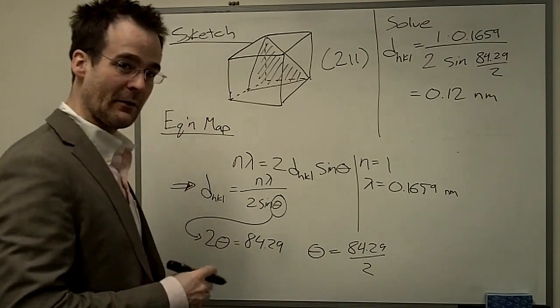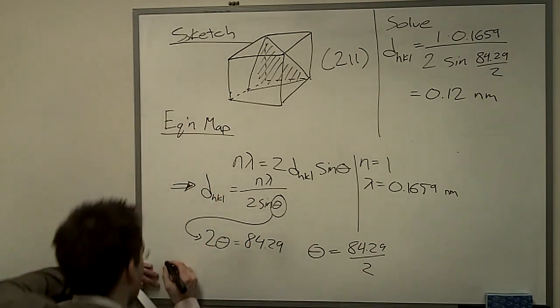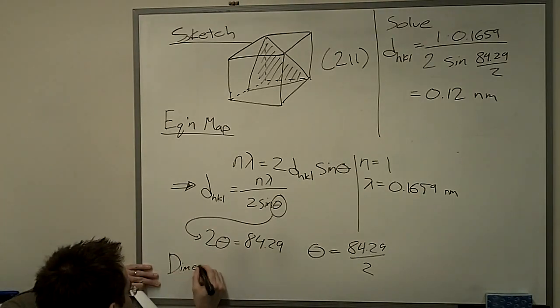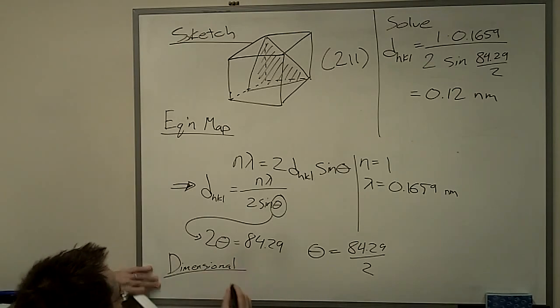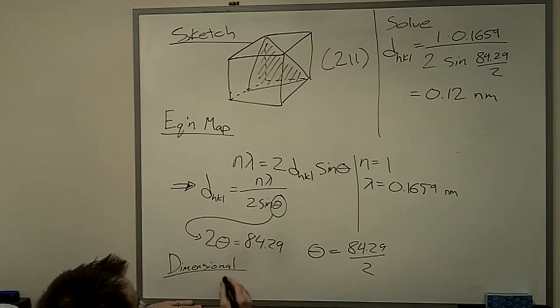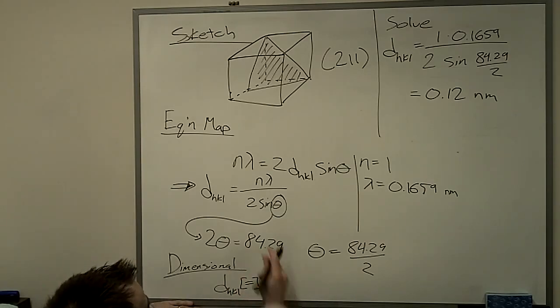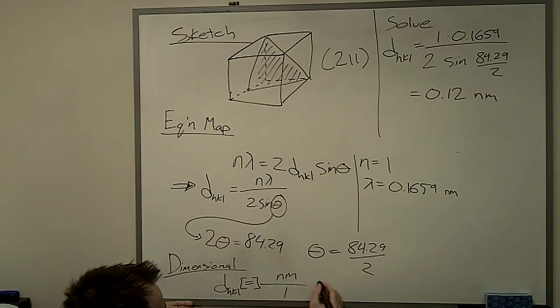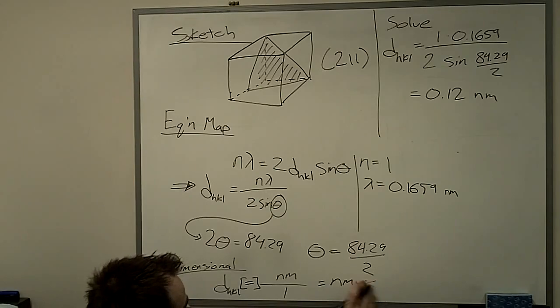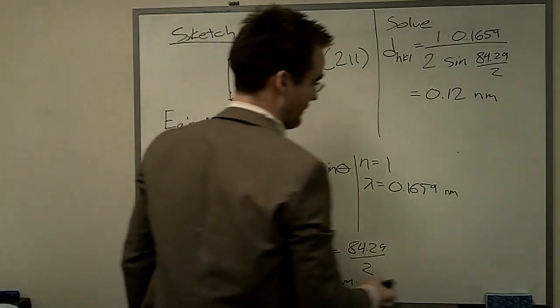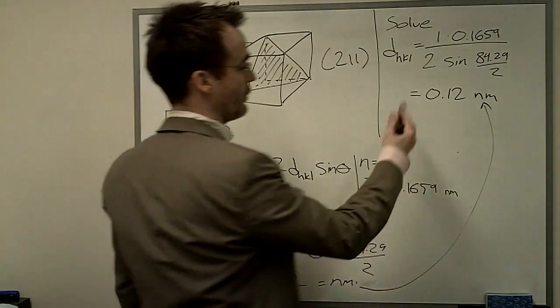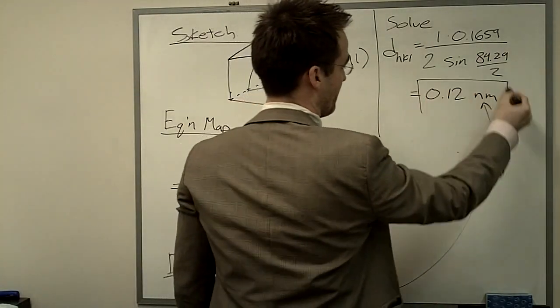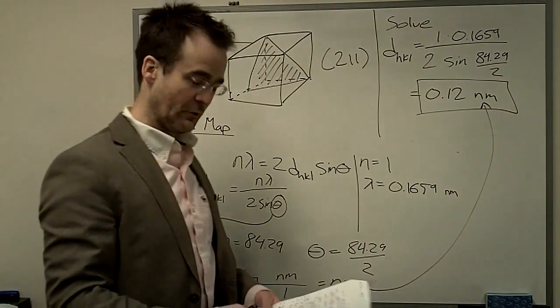The step I left out, which I'm just adding right now, is the dimensional analysis that I always like to do. So really quickly, we've got d_HKL has units of—n is dimensionless, λ has units of nanometers over 2sinθ is dimensionless as well. So sure enough, we've got nanometers, and so that's included in our final answer. Always include units in your final answer. Value is useless without units.